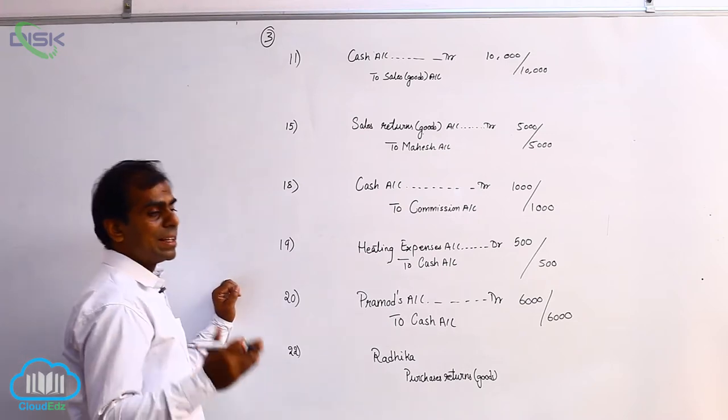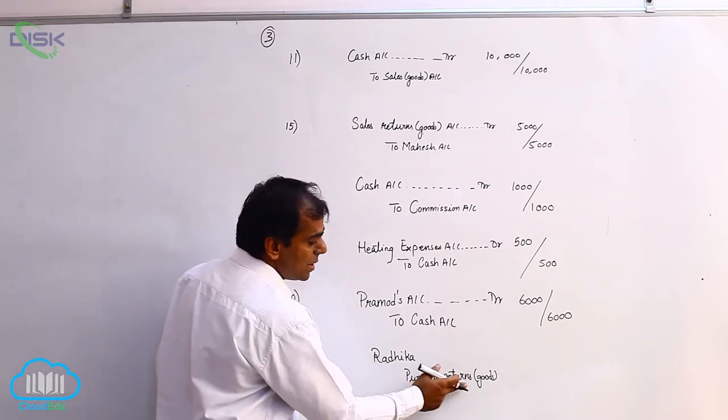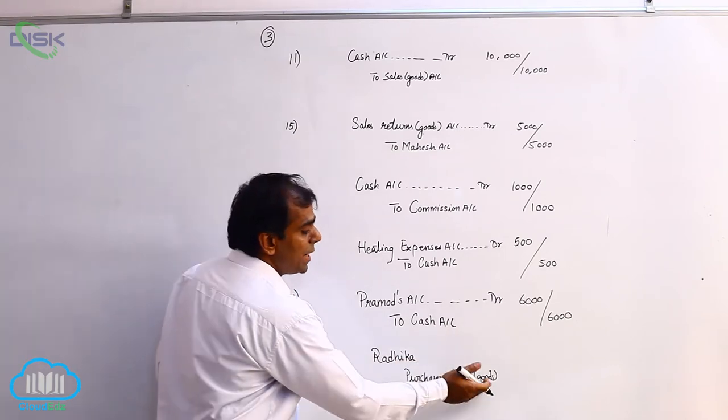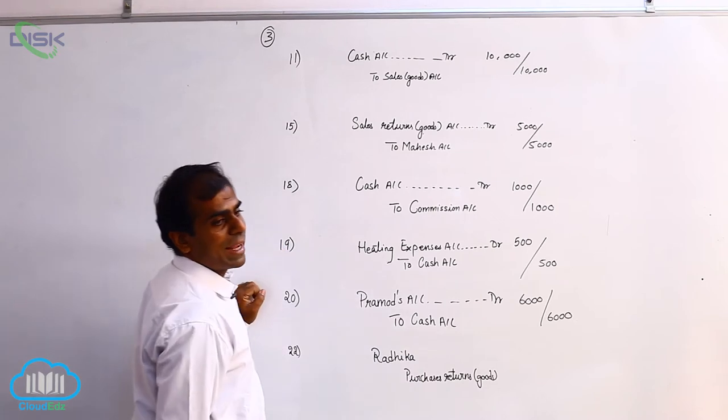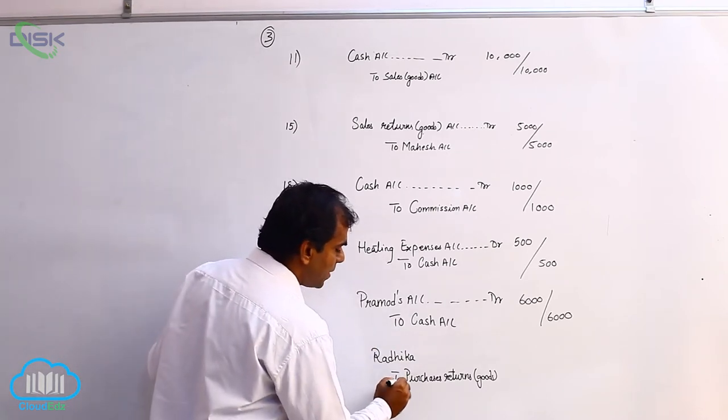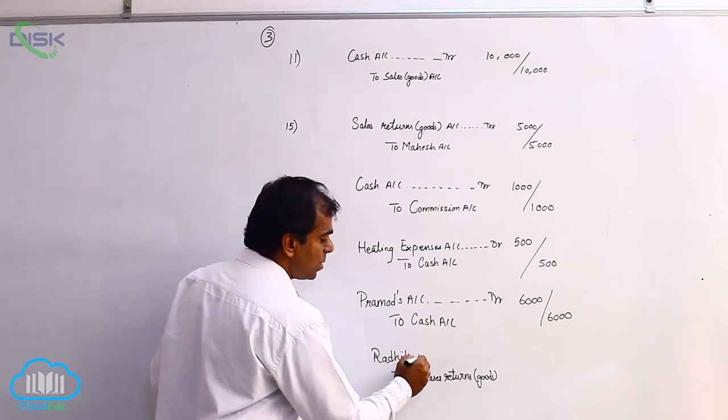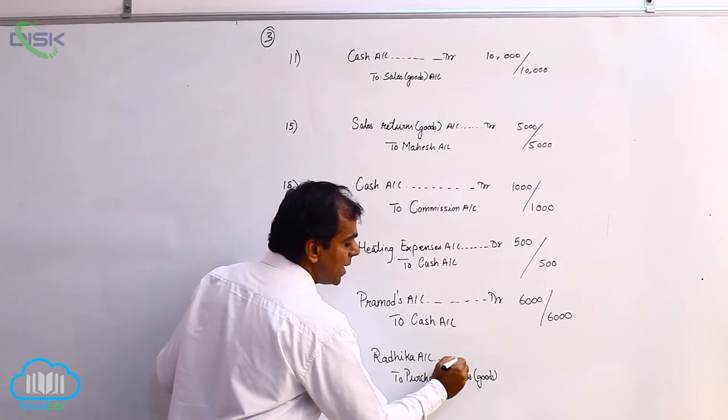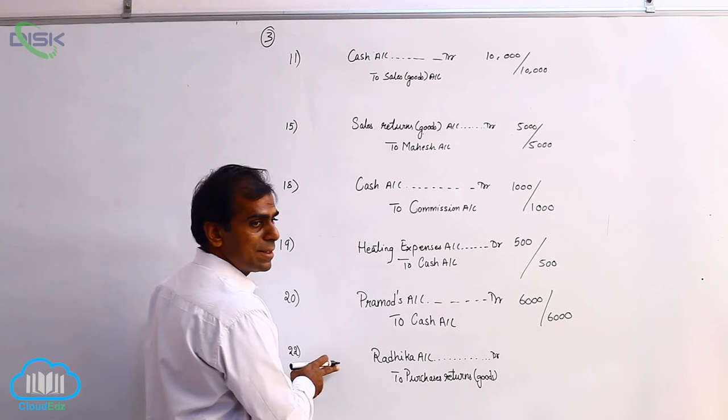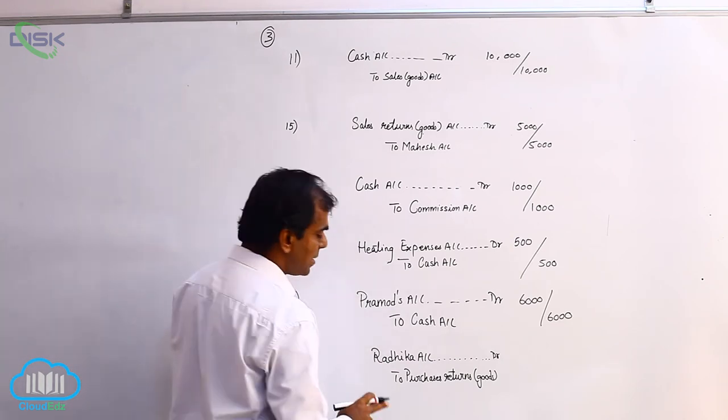When we are returning, they are going out because they are purchased goods and we are using the word purchase returns. So we apply the real account rule for goods: goods are going out, so credit what goes out. Therefore, we are crediting purchase returns. Now Radhika, you apply the rule of personal account. When the business is returning the goods to Radhika, Radhika becomes receiver. So debit the receiver. As a result, we are debiting Radhika's account.